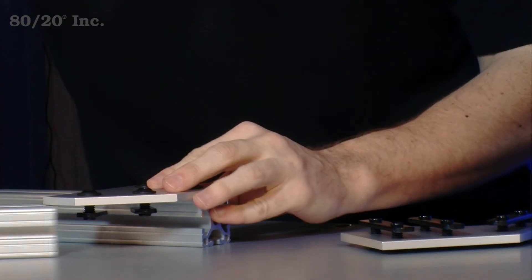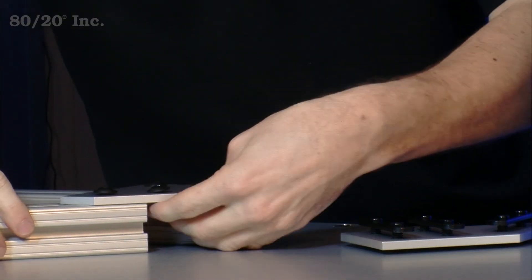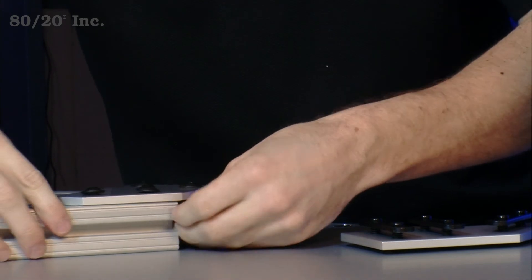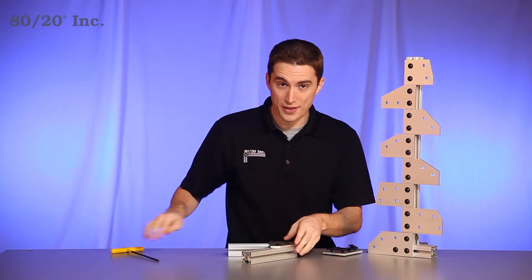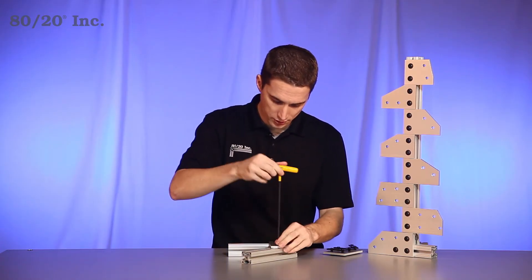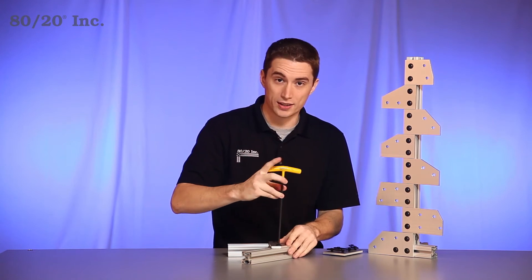We'll take our other profile and slide it right onto the other half of the angle plate. Once we have that in there, we'll take our wrench and tighten down the last two bolts.